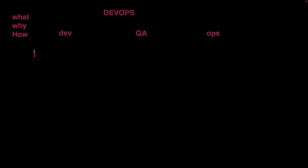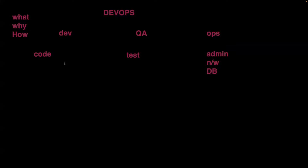Developers write the code and design the application. QA people test the application — through manual testing, automation testing, and so on. Ops teams are the people who work for deploying the application, for administrative tasks, networking, and database tasks. If the development team needs any operating system or new service, they would request the ops teams. Ops teams take care of infrastructure — any requirement the dev team has, they raise a request to ops team, and ops team should serve the request.